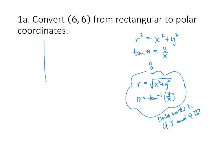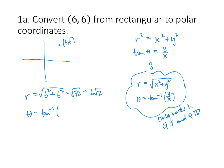So if we plot the point (6, 6), it's in quadrant 1, so we can use our formulas. r is going to equal the square root of 6 squared plus 6 squared, which is the square root of 72, or 6 times the square root of 2 — either one is fine. Then theta is the inverse tan of y divided by x, in this case 6 over 6, which is the inverse tan of 1, and that equals pi over 4. So the polar coordinates are (6√2, π/4).